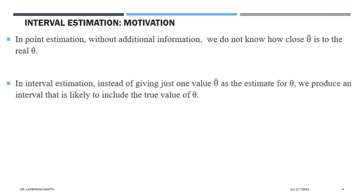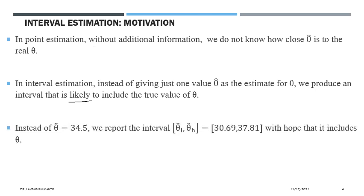This is the limitation of point estimation. In interval estimation, instead of giving a single estimate theta-hat, we produce an interval likely to include the true value of theta. The word 'likely' is important — there is a rare chance that theta may not be in the interval. That probability of theta not being in the interval is very small, called the rejection probability, denoted alpha — around 1%, 2%, or 3%.